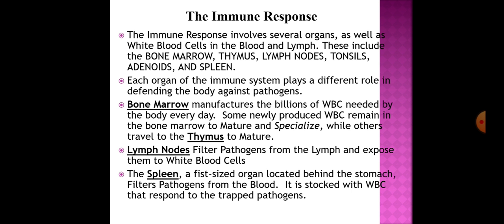The organs involved include the bone marrow, thymus, lymph nodes, tonsils, adenoids, and spleen. Each plays a different role in defending the body against pathogens. Bone marrow manufactures the billions of white blood cells needed every day — some remain in the bone marrow to mature and specialize, while others travel to the thymus to mature.